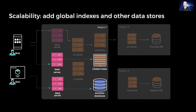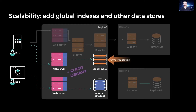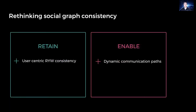As Tao grew, we also introduced global secondary indexes for the social graph, as well as other data stores to optimize for particular query workloads. These data stores are also asynchronously updated to cater toward our read-heavy workload. Developers moved from directly calling the Tao API to using a query language from a thick client library that can express more complex predicates over the graph, which provided opportunities for transparent query optimization. However, these additional read-write paths introduced similar consistency problems that write-through caching did not cover.